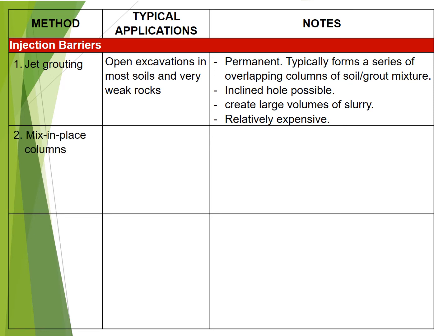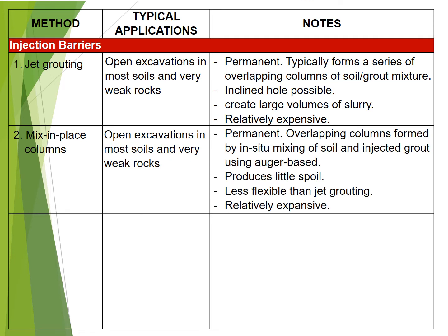2. Mix-in-place columns: used for open excavations in most soils and very weak rocks. Permanent. Overlapping columns are formed by in-situ mixing of soil and injected grout using an auger-based system. Produces little spoil. Less flexible than jet grouting. Relatively expensive.